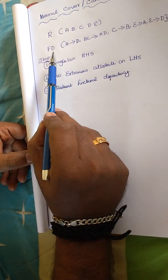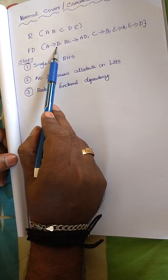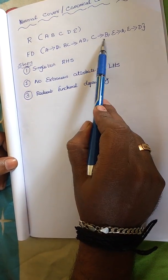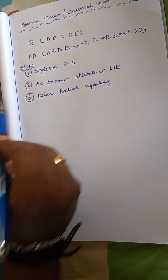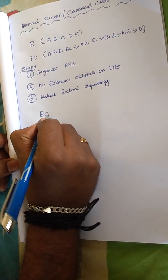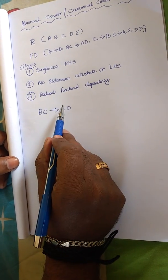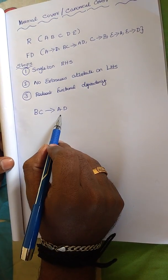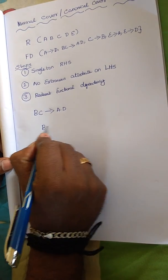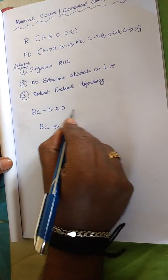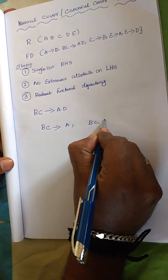As per the first step, we look at the functional dependencies. A determines D — no issue. C determines B — no issue. E determines A and E determines D — no issue. But BC determines AD has more than one attribute on the right-hand side. We need to use the decomposition rule and break it into two: BC determines A, and BC determines D.